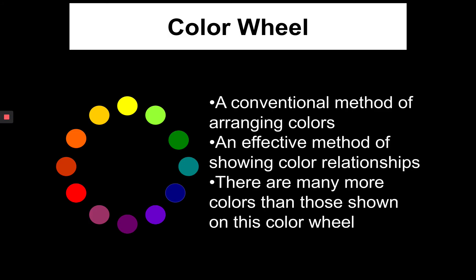The color wheel is a conventional method of arranging colors. There are 12 on the traditional color wheel so that we can show color relationships, but there are many more. In fact, often when you click on a computer screen and try to adjust your colors, it may offer millions of colors because there are so many variables.